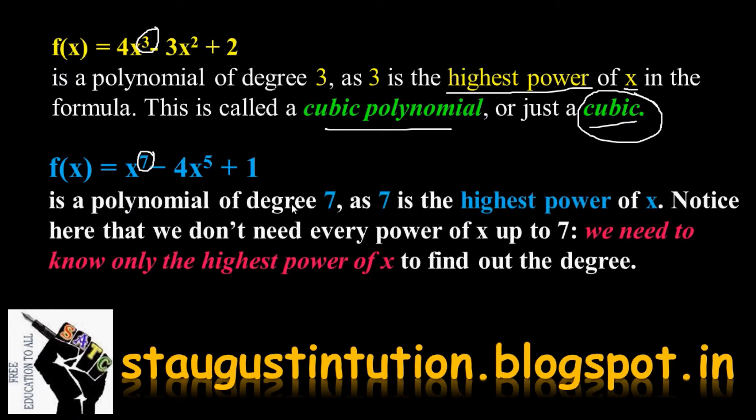It is a polynomial of degree 7 as 7 is the highest power of x. Notice here that we don't need every power of x up to 7. We need to know only the highest power of x to find out the degree. To find out the degree, we need to know only the highest power of x.